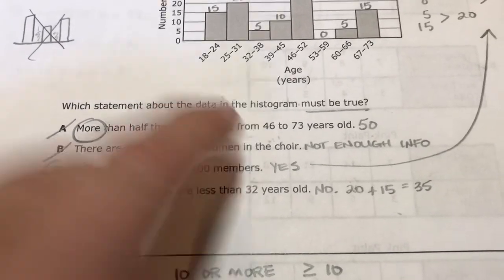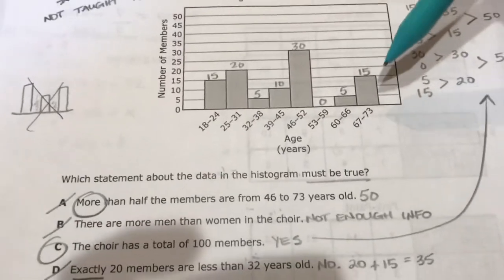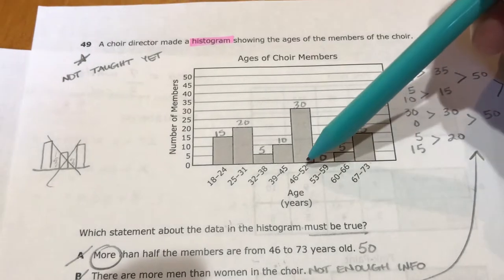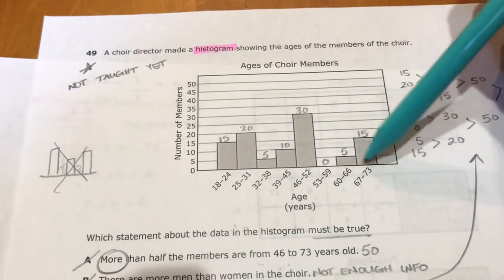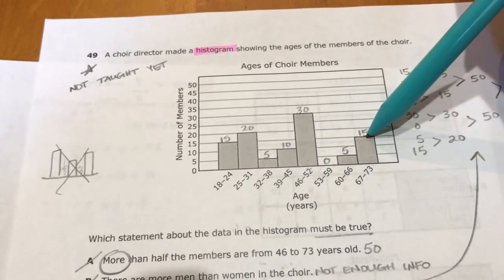So now I can kind of go through my questions. This says more than half of the members are from 46 to 73 years old. Well, 46 all the way to 73, that means I need all of these bars. So in that range of all of this, you had 30, 0, 5, and 15. Well, 30 plus 0 is 30, plus 5 is 35.